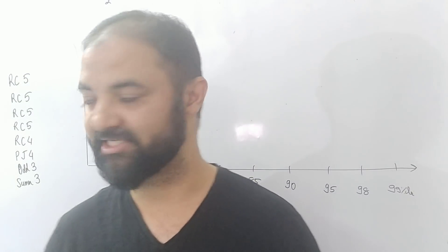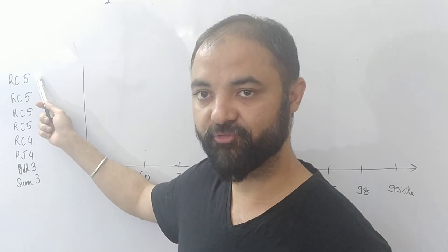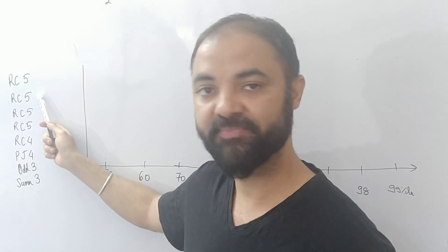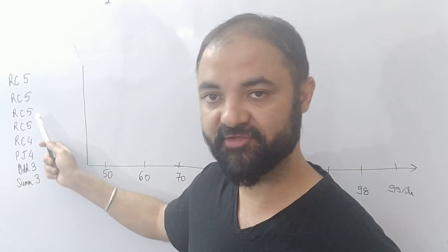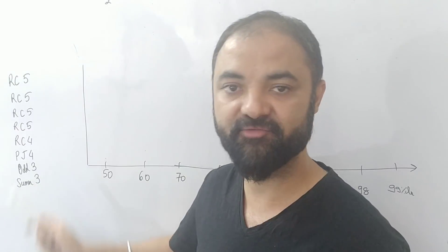So let's start. Today we are going to talk about the Verbal section. So Verbal section there were 34 questions: RC 5 questions, first RC 5 questions, second RC 5 questions, third RC 5, fourth RC 5, and fifth RC 4 questions.